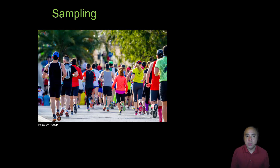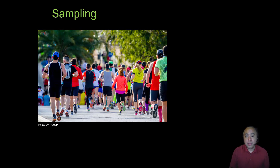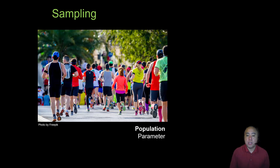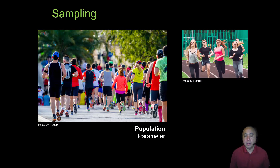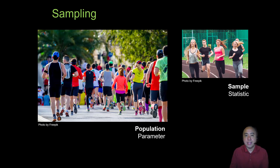Let's say I'm interested in some attribute of runners — whether it's BMI, VO2 max, or heart rate. The most complete way to examine these attributes is to collect data on every single runner in the population, which is obviously implausible. The scores or variables measured from that population are called parameters. More often, we draw samples from that population and make statistical inferences about what that population is doing based on a statistic measured in the sample.